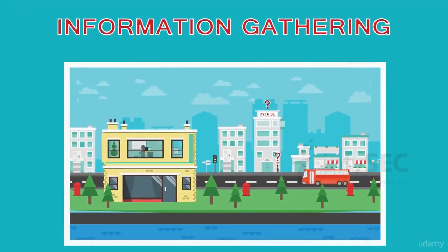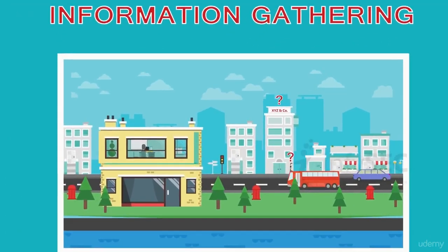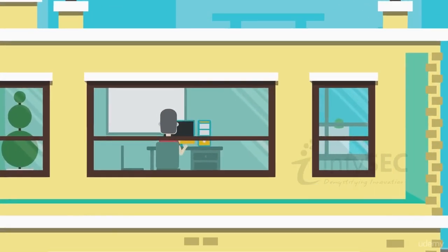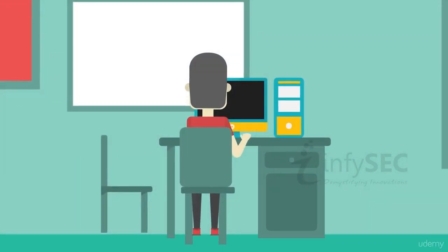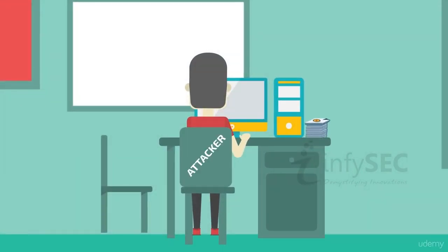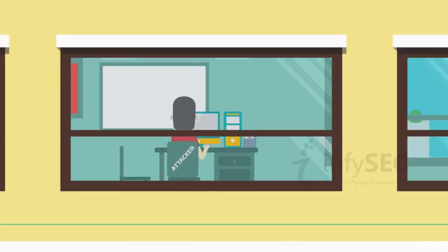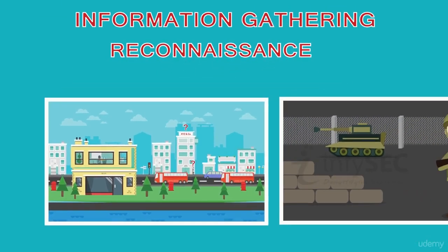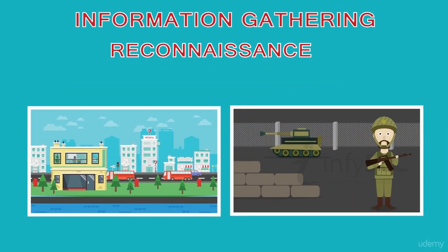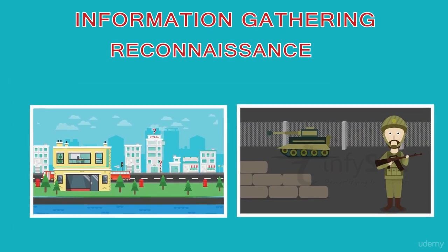What is information gathering? Information gathering is the preparatory phase for an attack that involves a collection of information to reveal holes in a system. This process is also called reconnaissance, which is the term the military uses when it has to gather information in order to study the enemy.